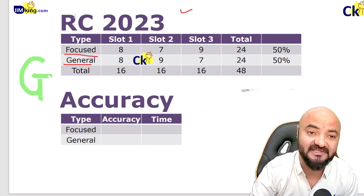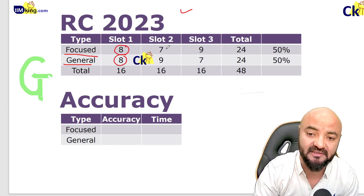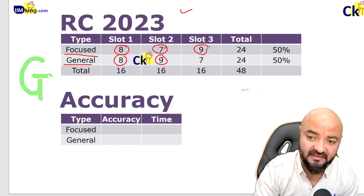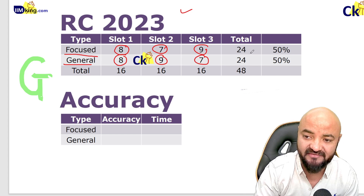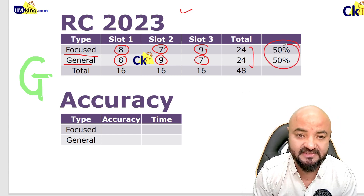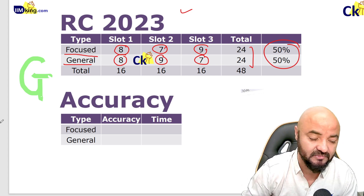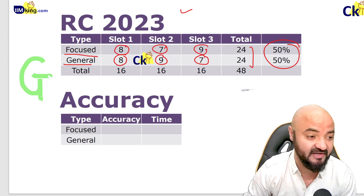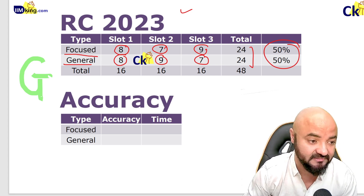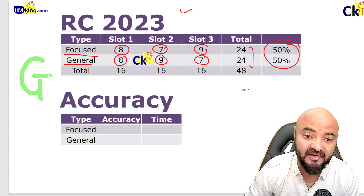When I look at the CAT paper slot one, there are exactly eight focused questions and eight general - then seven, nine, nine, nine, seven - so 24 to 20. Exactly 50 percent of the paper is focused. So even if the RC is very hard to read, I can still survive by doing all the focused questions.